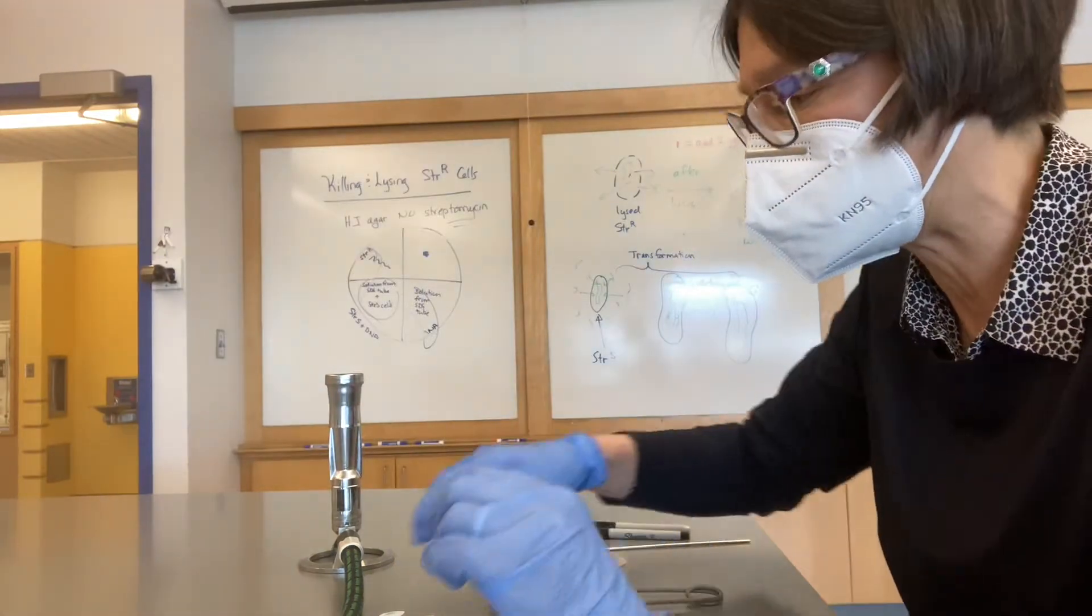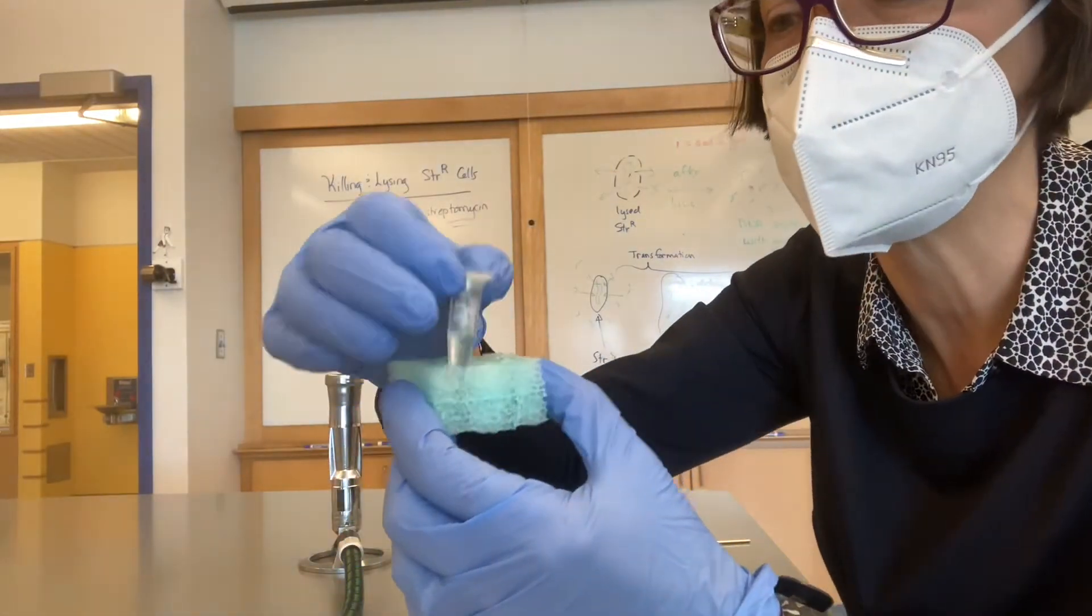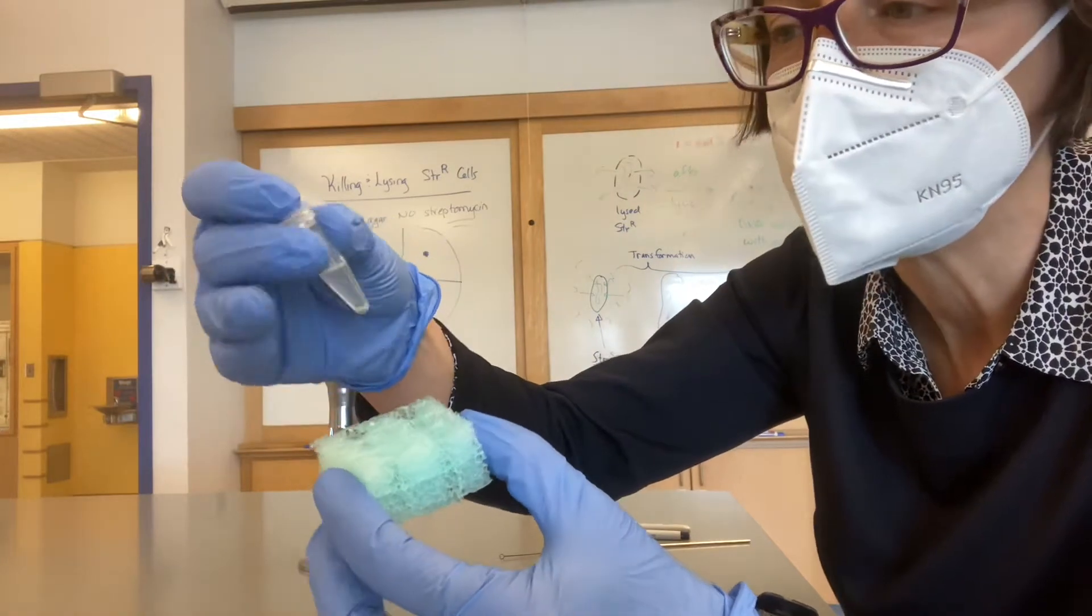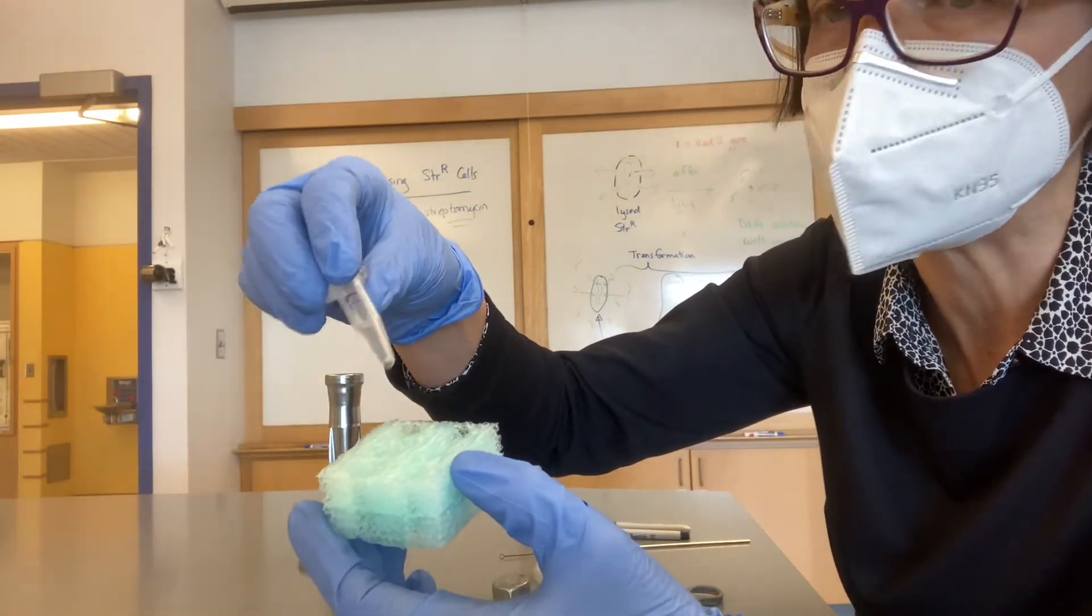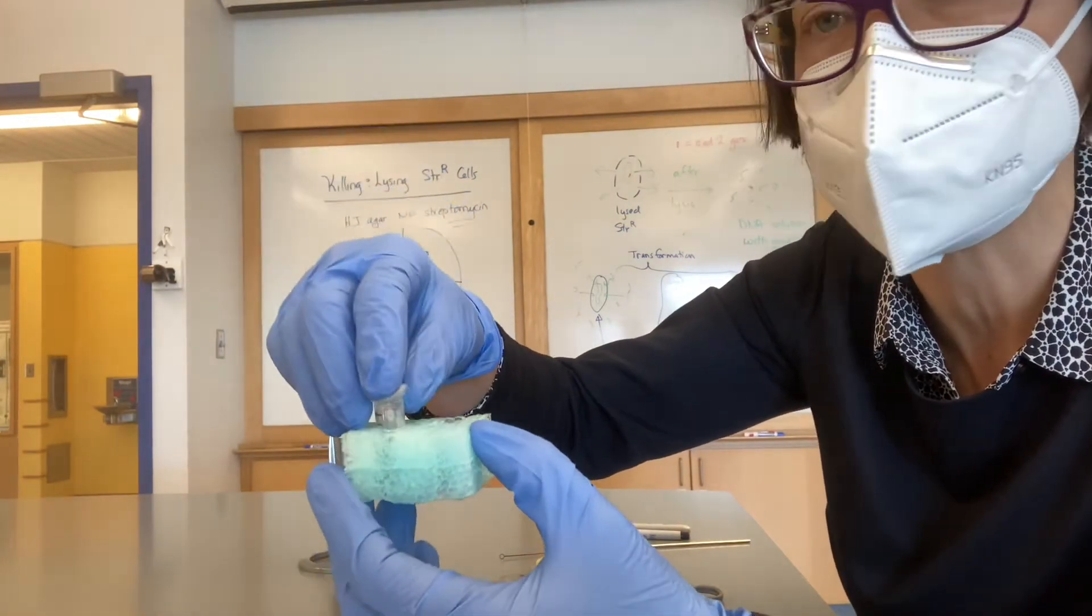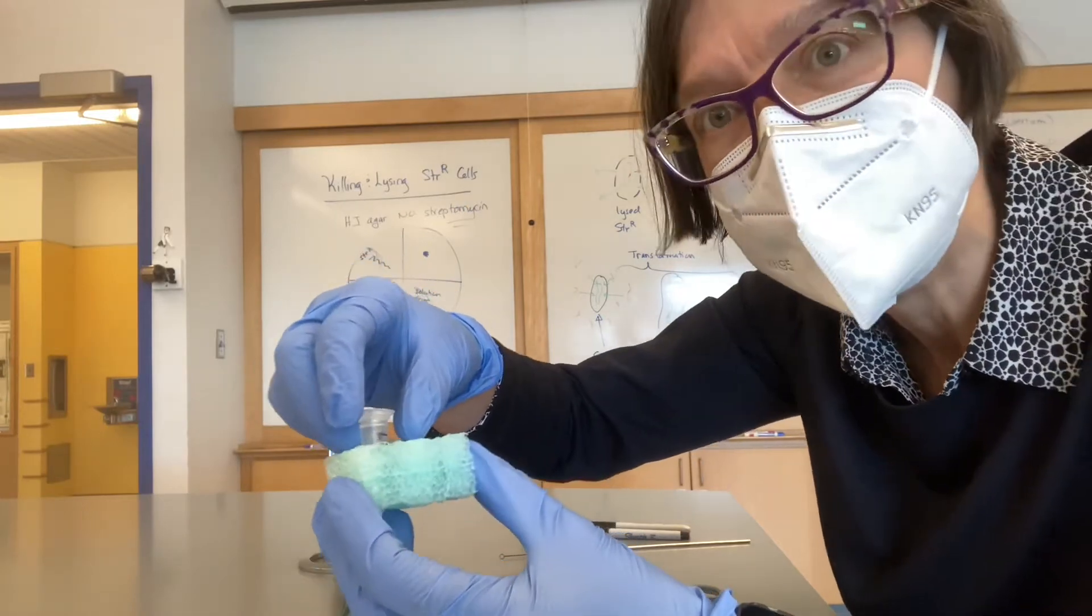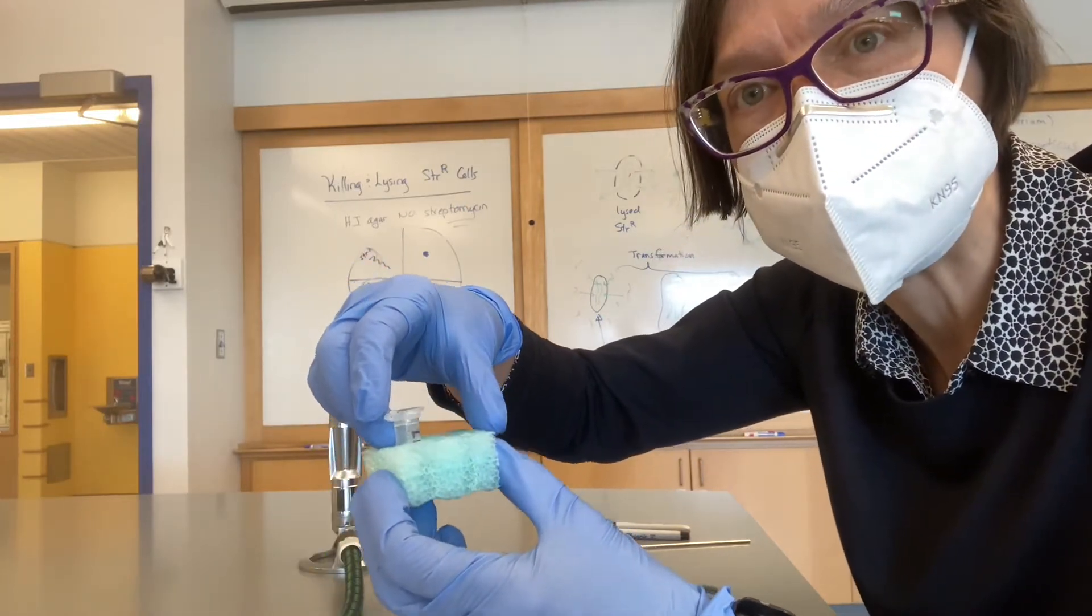You also have a small tube labeled SDS, or sodium dodecyl sulfate. It's a detergent, and we're going to be using it to kill some of the cells from the resistant strain.